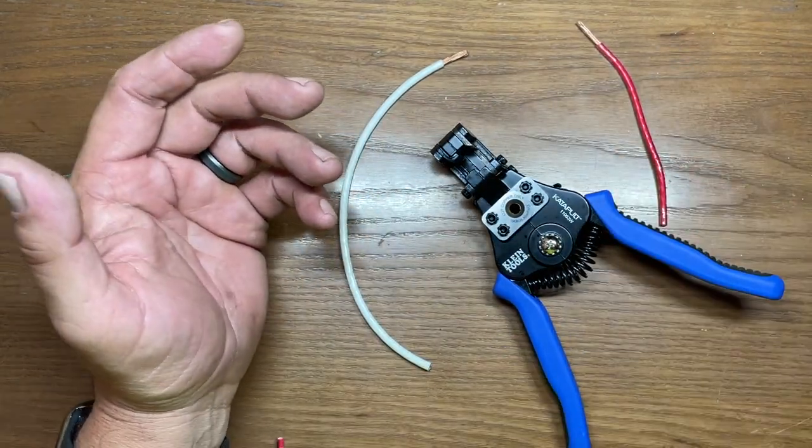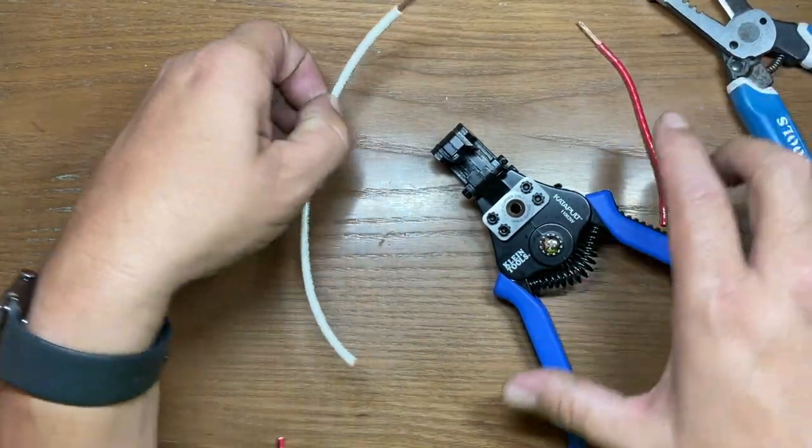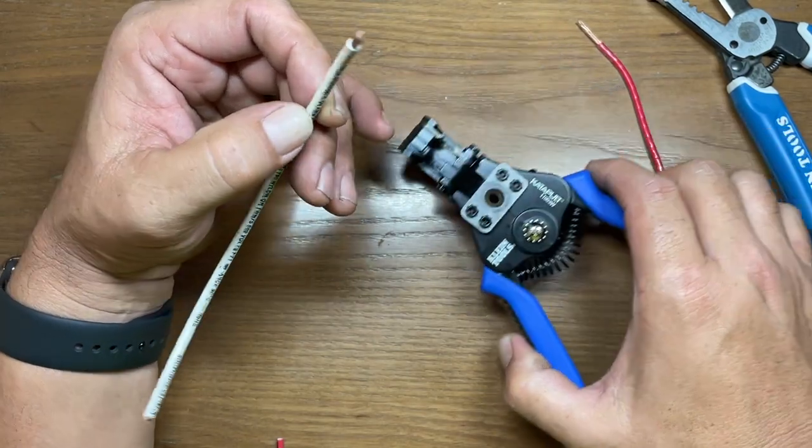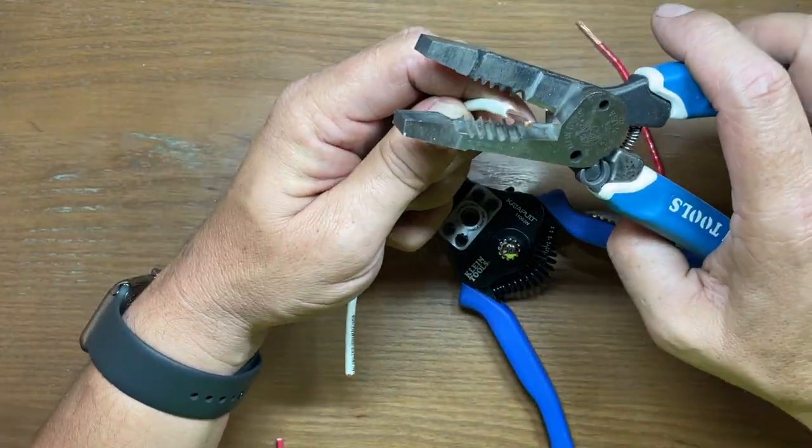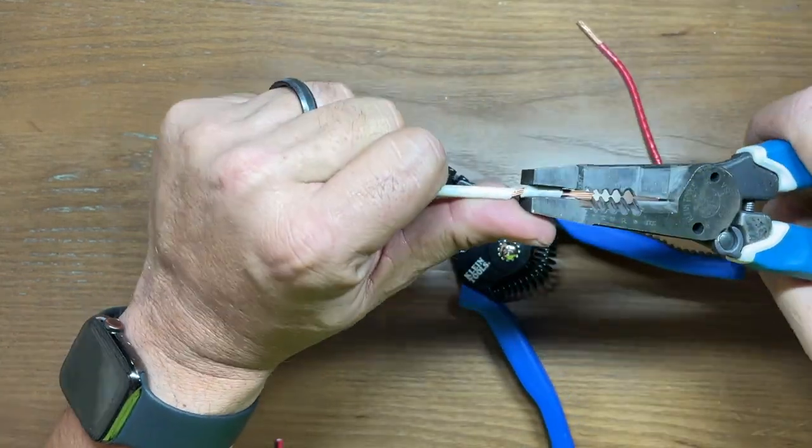Now, you're always going to have a need for your standard wire strippers. That's another downside to these, is you're not going to be able to get into the absolute tightest quarters with these. So sometimes you'll just need a regular set of wire strippers in order to perform those tasks.